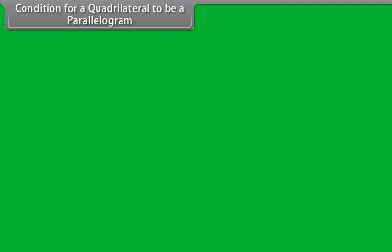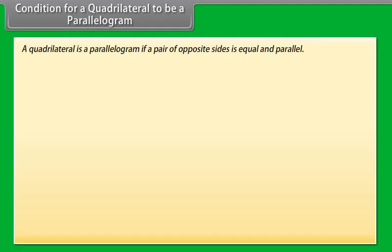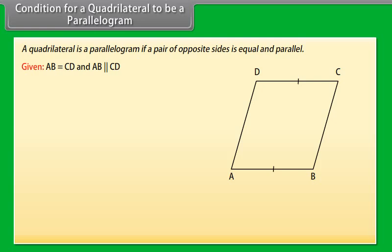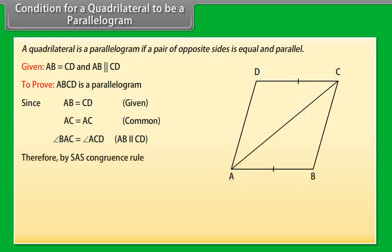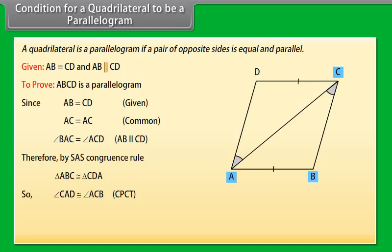Condition for a quadrilateral to be a parallelogram: A quadrilateral is a parallelogram if a pair of opposite sides is equal and parallel. Given AB equals CD and AB is parallel to CD, we have to prove ABCD is a parallelogram. Draw diagonal AC. Since AB equals CD (given), AC equals AC (common), and angle BAC equals angle ACD (AB parallel to CD), by SAS congruence rule triangle ABC is congruent to triangle CDA. So angle CAD equals angle ACB (CPCT), therefore CB is parallel to AD. Hence ABCD is a parallelogram.